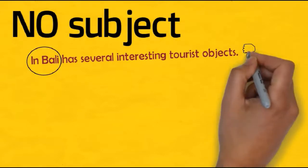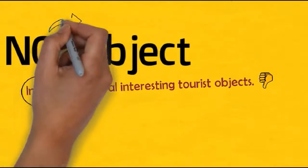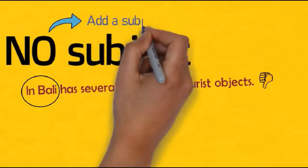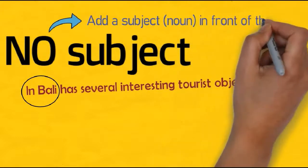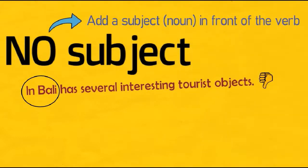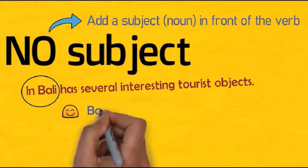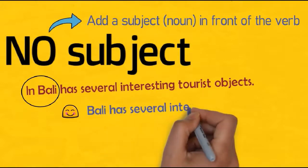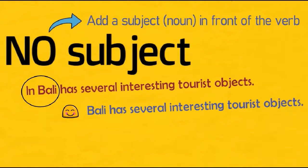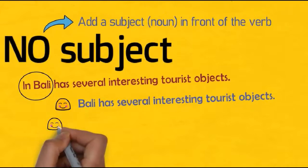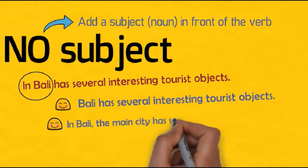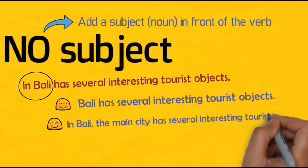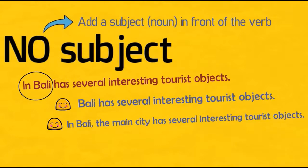To solve a missing-subject fragment, simply add a subject or noun in front of the verb. In the first correction, the subject is 'Bali,' not 'in Bali,' because 'in Bali' is an adverbial phrase, not the subject position. In the second correction, new words are added so the subject becomes 'the main city.'